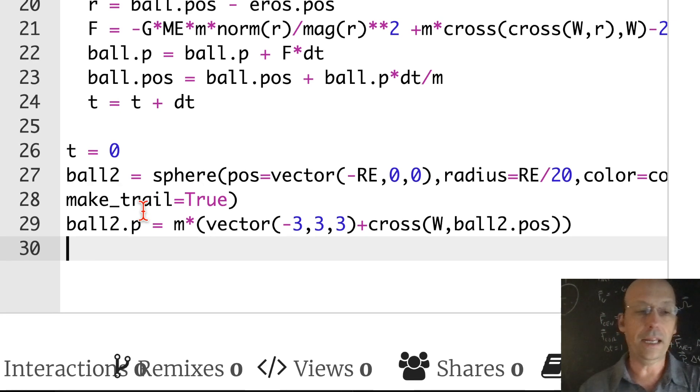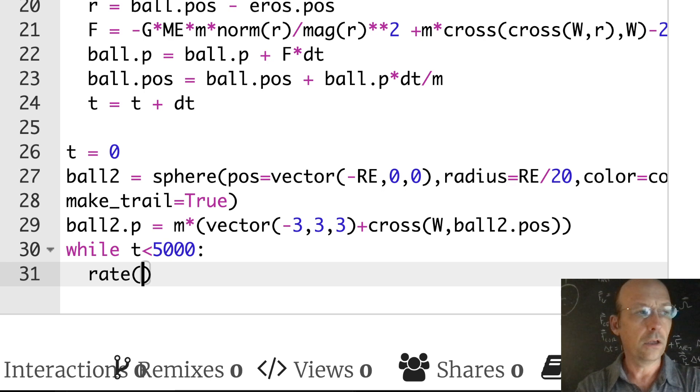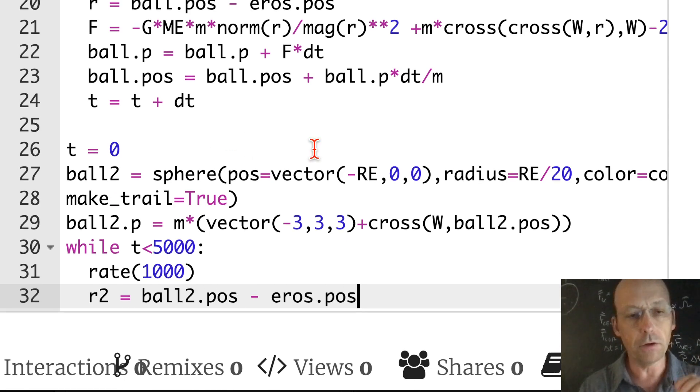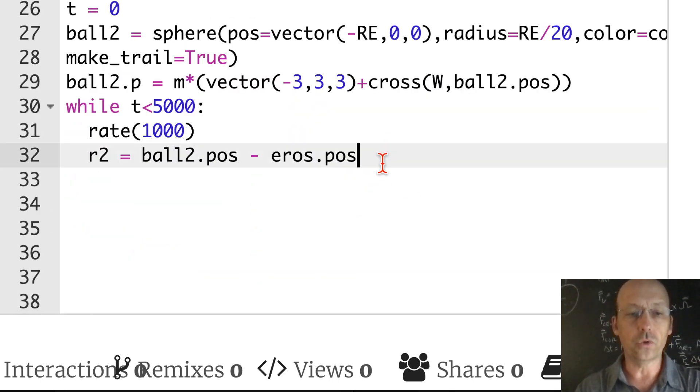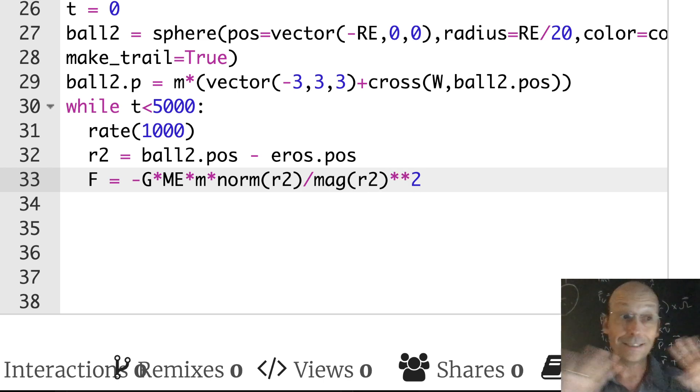Now let's just go ahead and calculate the motion. And then we can rotate the planet and make sure things are working. So again, I'm going to start off with while t less than 5000, rate 1000. R2 is ball two dot pos minus eros dot pos. Again, I just want to be good. And then I'm going to calculate the force. F is negative G times ME times m times norm R2 divided by mag R2 squared. And that's it. There is no centrifugal force, there is no Coriolis force. I'm in the inertial frame now. So that's the only force on it.